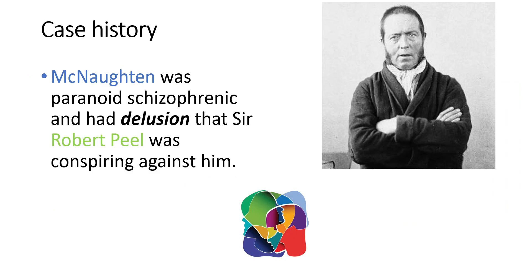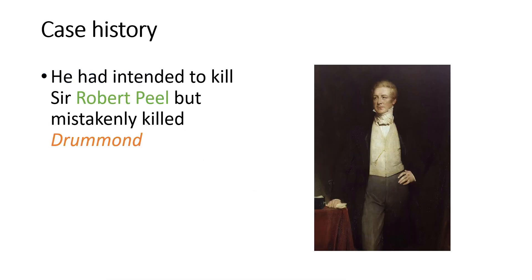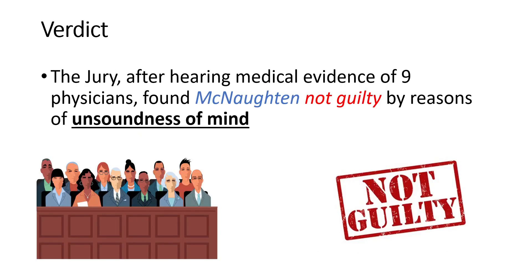McNaughton was a paranoid schizophrenic and was suffering from delusions of persecution. He believed that Sir Robert Peel was conspiring against him, so he intended to kill Robert Peel, but mistakenly killed Mr. Drummond. When this case was tried in court, the jury, after hearing medical evidence from nine physicians, found McNaughton not guilty by reason of unsoundness of mind.